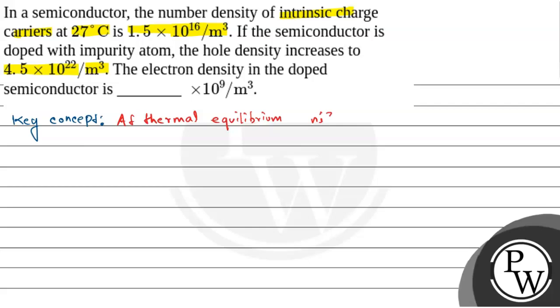Ni squared equals Ne × Np. The charge carrier densities of electron, hole, and intrinsic charge carriers are related by this equation.